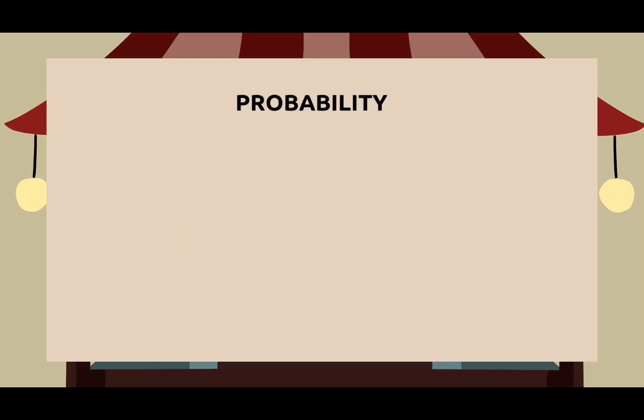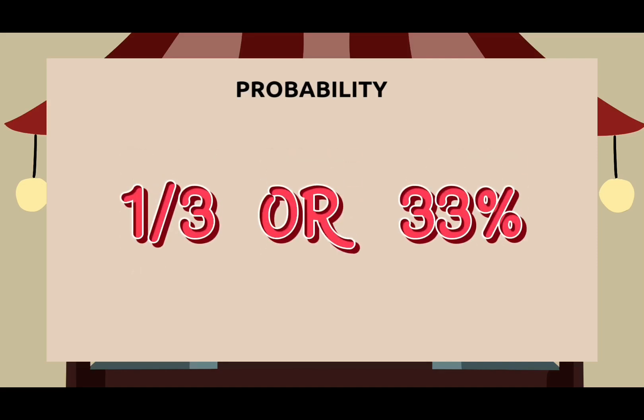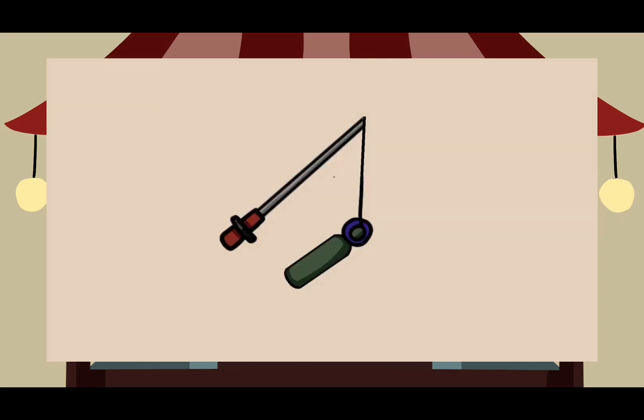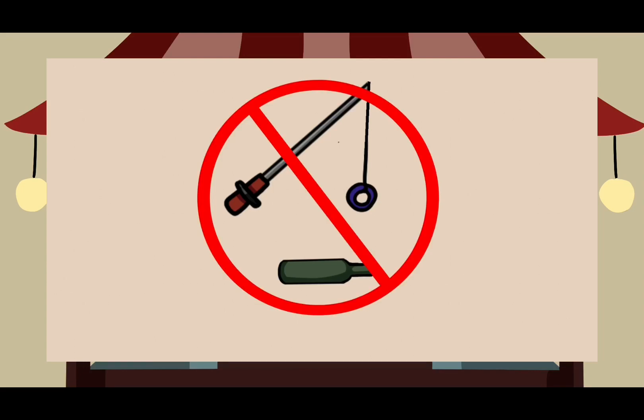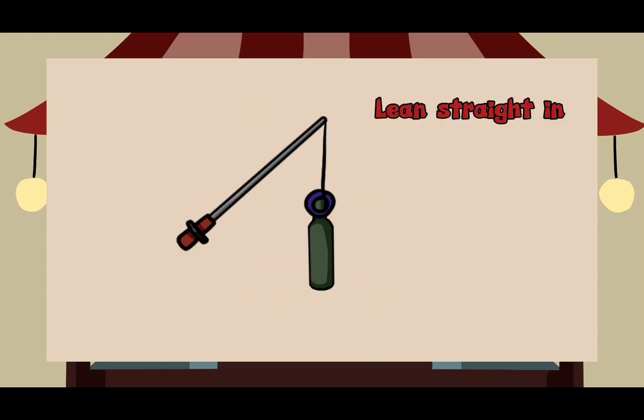The probability of winning this game is actually closer to 1 over 3, which is 33 percent. But if you have skills on this game, the probability or chances of winning may be increased. The key is to lean straight in. Don't lift up. If you lift up, the ring will come off the top of the bottle and the bottle will fall to the ground, along with your hopes and dreams of being a carnival game hero. You must lean straight in, keeping the pole as steady as you can, not going too fast, and keeping the ring in contact with the bottle.